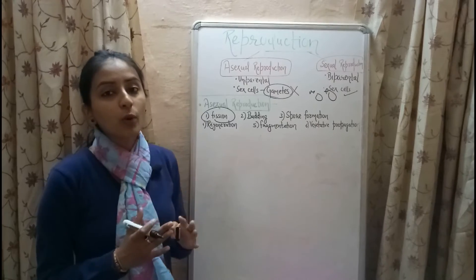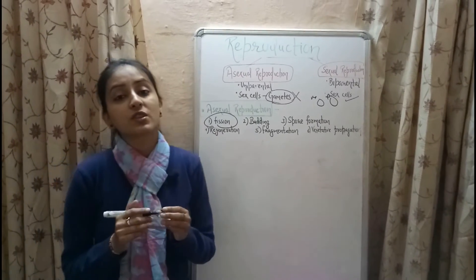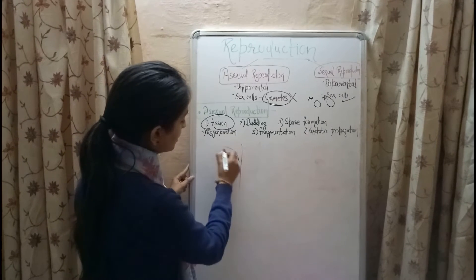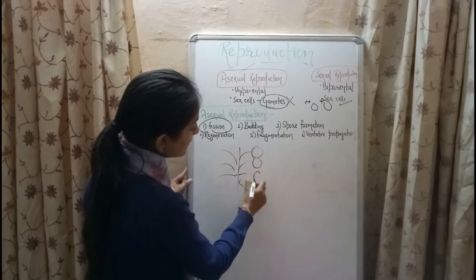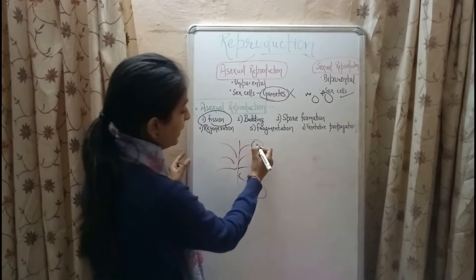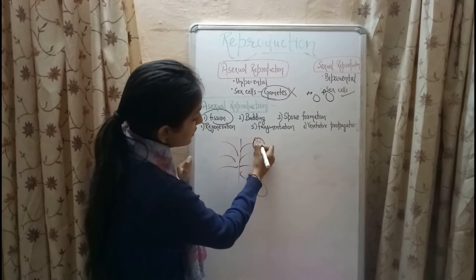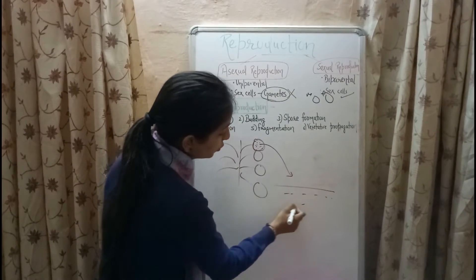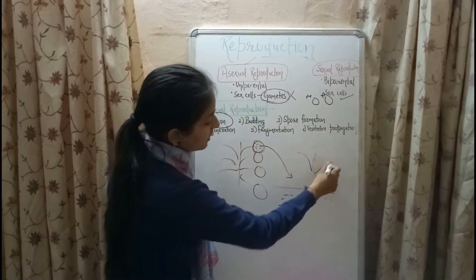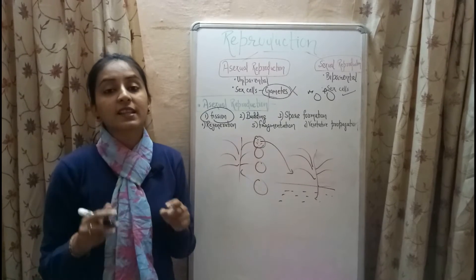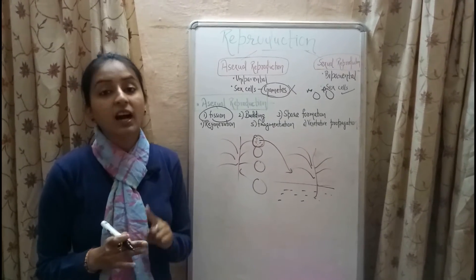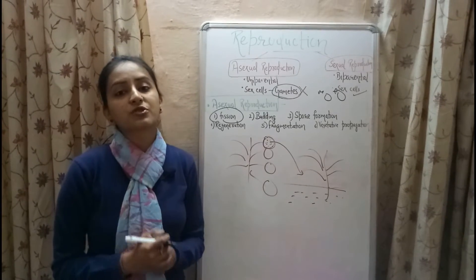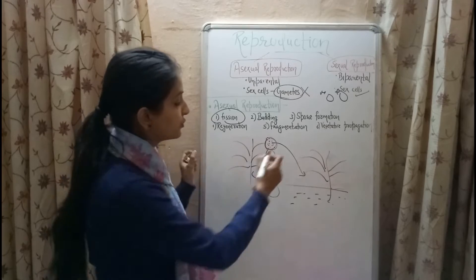The next method is spore formation, which takes place in plants. The plant produces reproductive units called spores, and these spores are responsible for producing new plants. Spores are produced inside the spore case of the plant. When the spore case bursts, the spores land on the soil and produce new plants. Spore formation occurs in non-flowering plants like ferns and mosses. It also takes place in bacteria and in fungi like rhizopus and mucor.